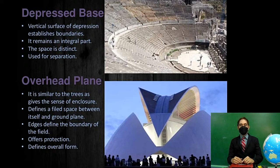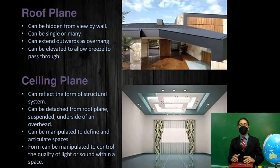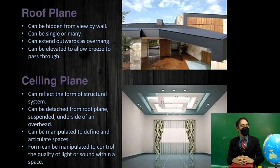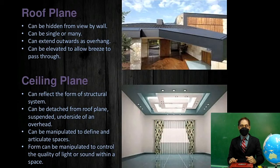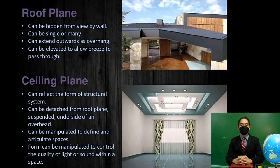The edges of the overhead plane define the boundary of the field and offer protection. A roof plane can be hidden from view by a wall, can be single or many, can extend outward or overhang, and can be elevated to allow breeze to pass through. The ceiling plane can reflect the form of a structural system, can be detached from the roof, or suspended. Its underside can be manipulated to define and articulate spaces, and to control the quality of light and sound within the space.